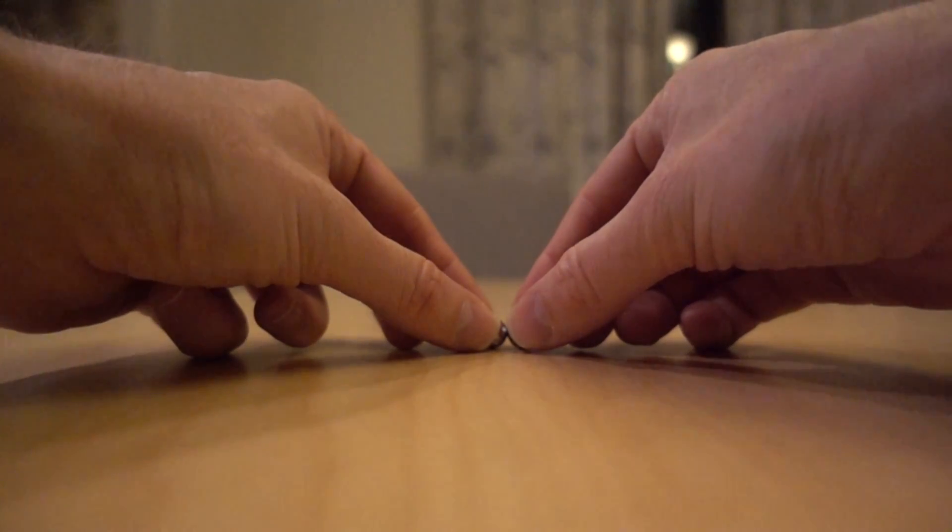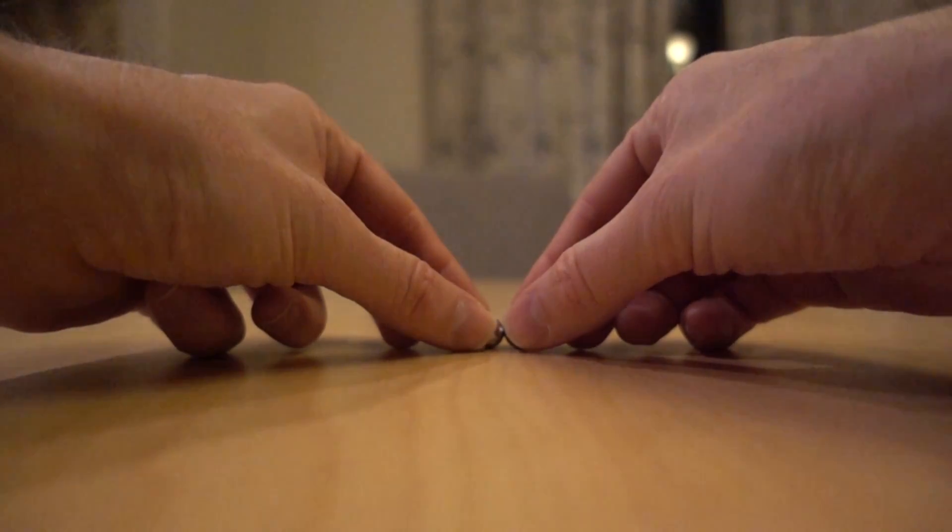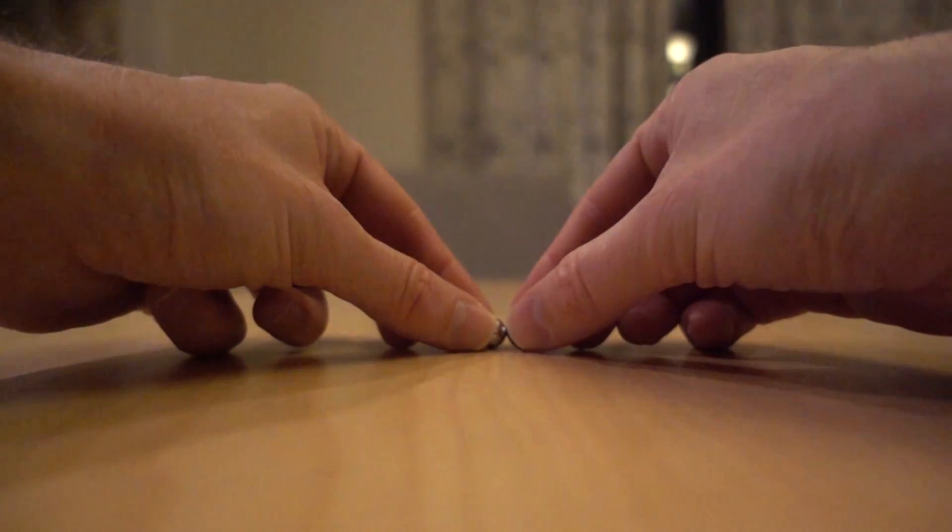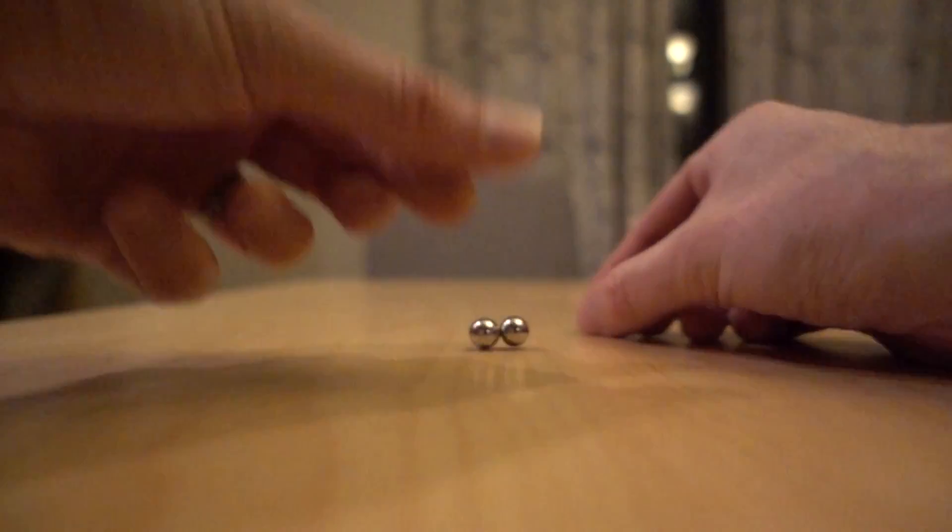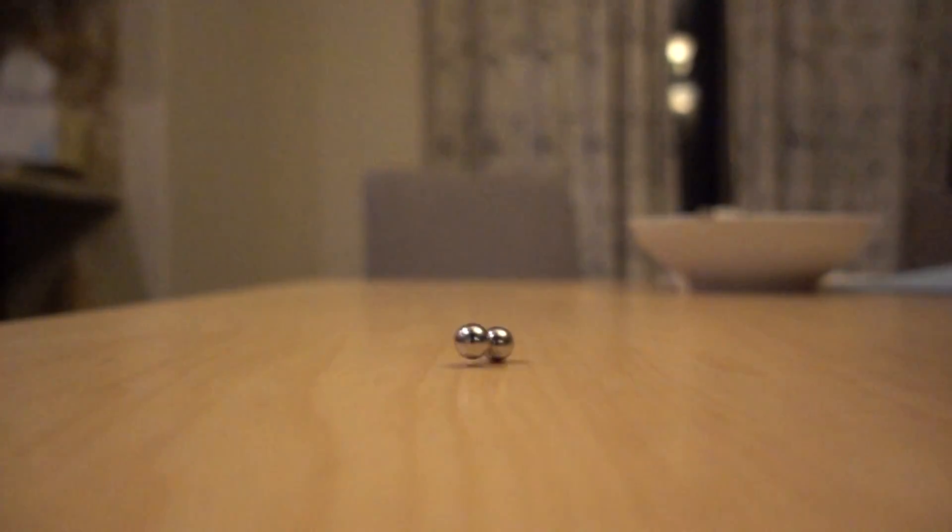So if we slow this down, you can see what's happening here. For some reason when I spin it, one of the balls lifts in the air. That's kind of an odd thing to happen because what that means is that the center of mass that used to be down here now moved to the top.